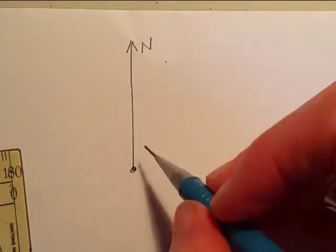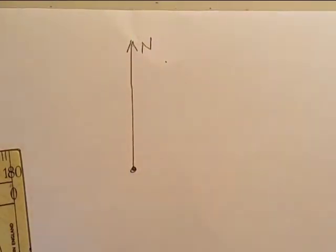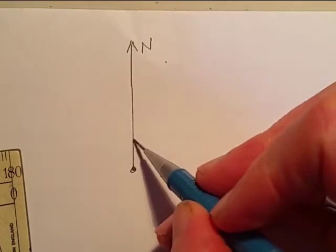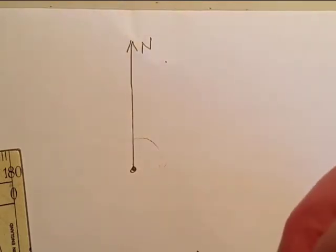Now as you know, bearings are always measured clockwise from your north line, so they're always measured from here around in that direction.